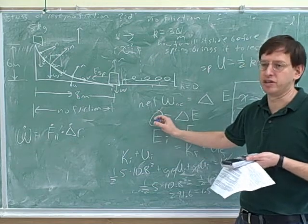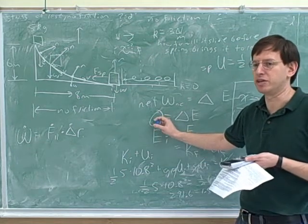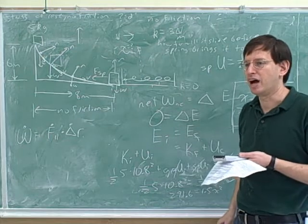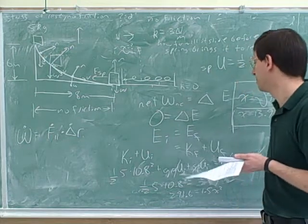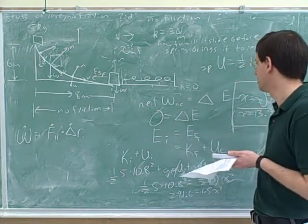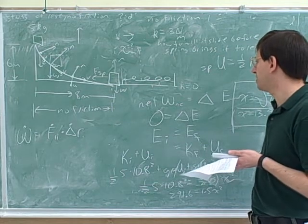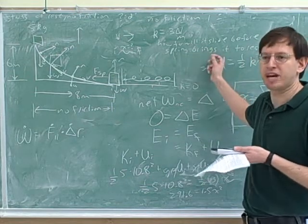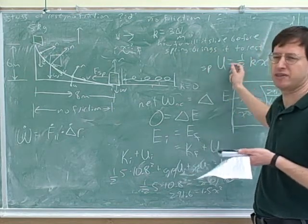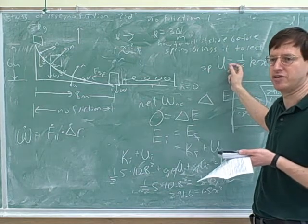But we did do one problem today when this wasn't zero, because friction was decreasing the energy, and then we used the left-hand column for step four. But most of the problems will have the conservation of energy. Mostly, we were working with gravity today, but you can see that springs are not that much more complicated. You just have a different formula for calculating the potential energy.